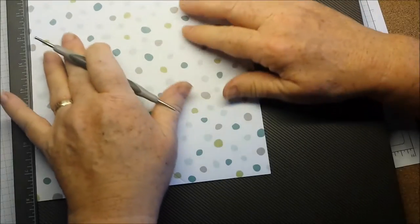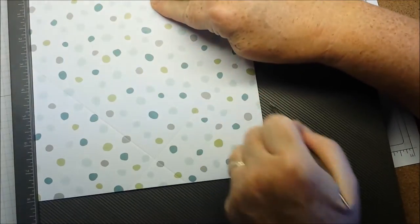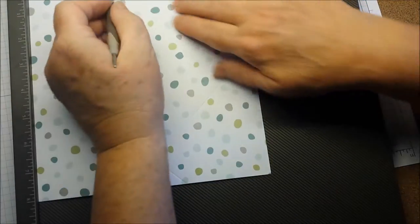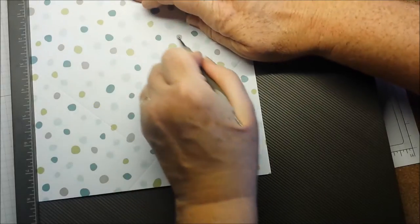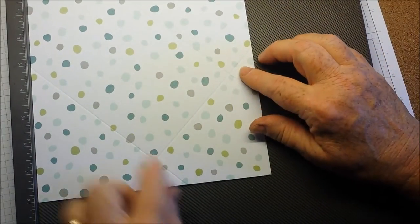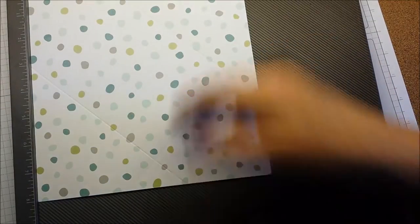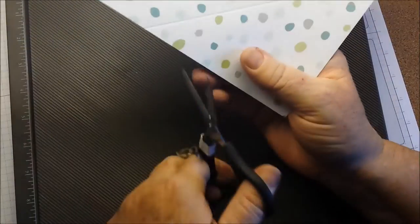And I find it easiest just to turn it around 4 times. And you will have 4 triangles in the center of each side. And snip those away.